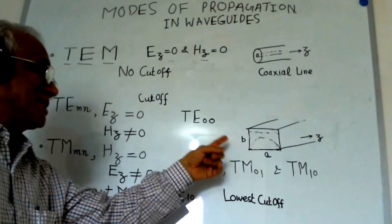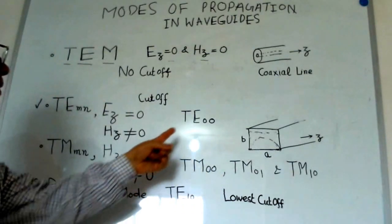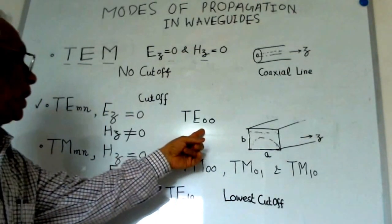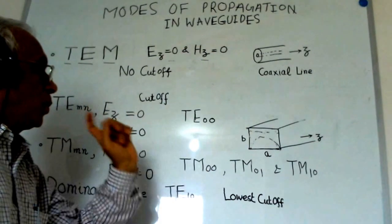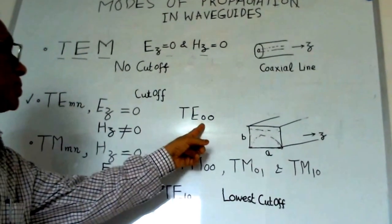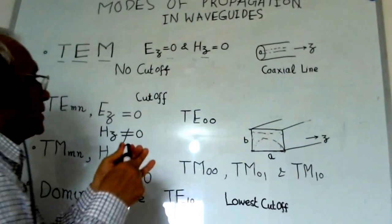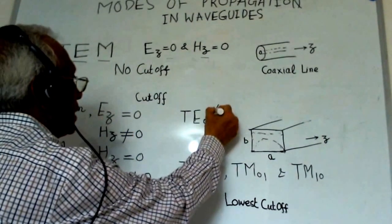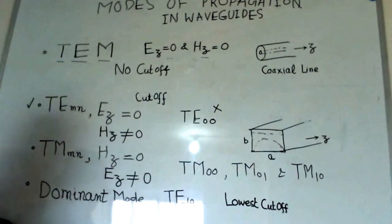As I said, all the modes exist in the waveguide. But the mode having both M equal to zero and N equal to zero does not exist. So TE00 mode does not exist in a rectangular waveguide.